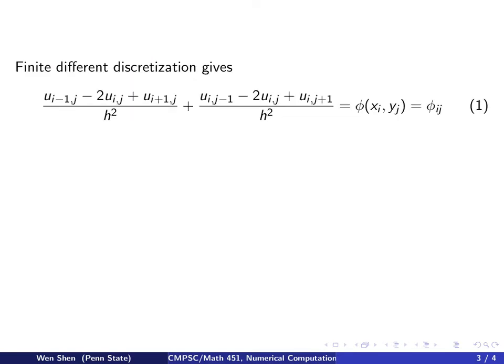If we set up finite difference discretization, then the left-hand side becomes the same as the Laplace equation. The only difference now is, the right-hand side is not zero, it is phi evaluated at xi and yj.